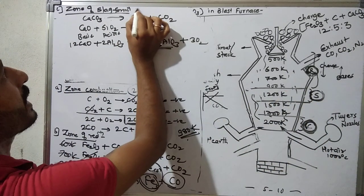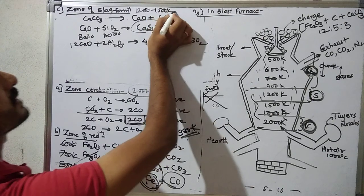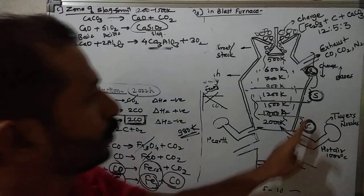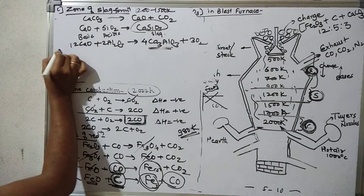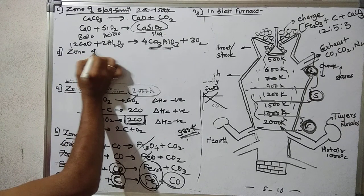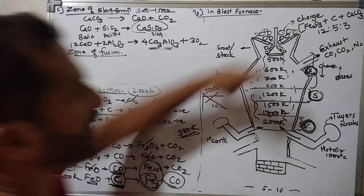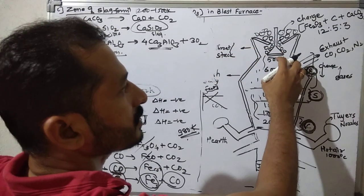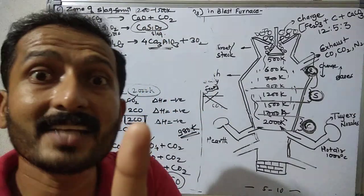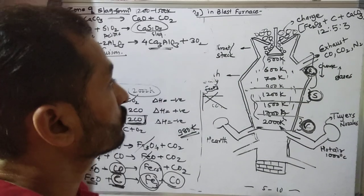And at last, the zone of fusion. Zone of fusion. What happens in the fusion zone? Fe is coming down. Initially, the temperature is low, so Fe is solid. Remember, iron's melting point is 1800 Kelvin. As it moves down, the solid Fe that was formed above gradually moves down.